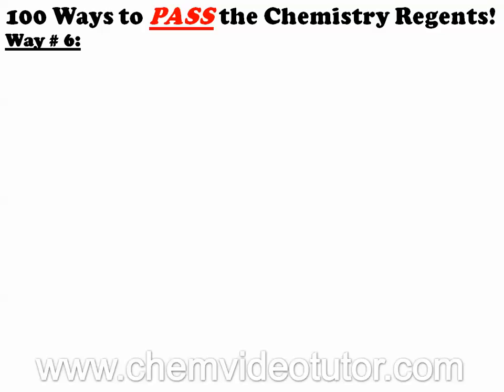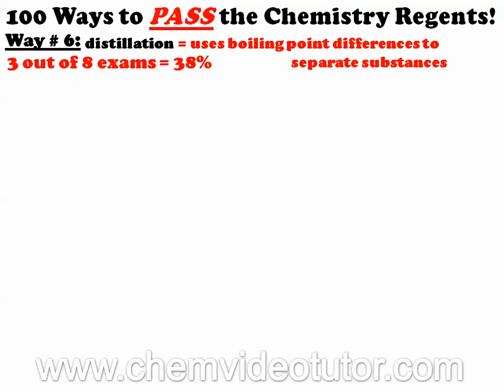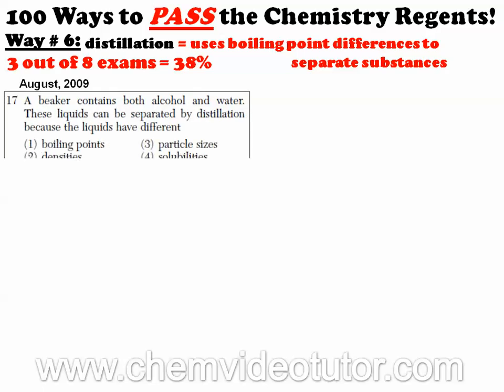Way number six on how to pass the chemistry regents. Distillation is a process that uses boiling point differences to separate substances. There were three questions out of eight exams that asked about distillation. Here's one from the August 2009 chemistry regents.